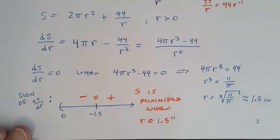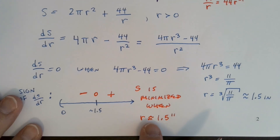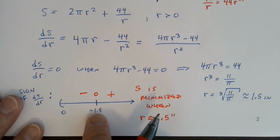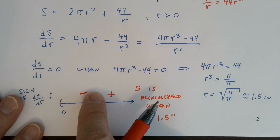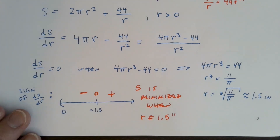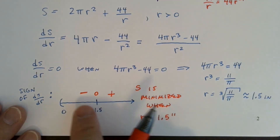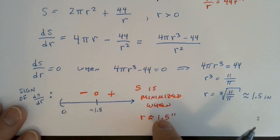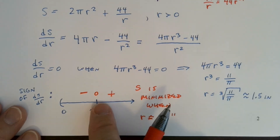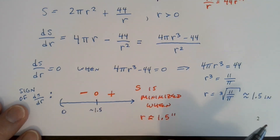Since this is the only extreme value on the domain, the function decreases on (0, 1.5) and increases on (1.5, ∞). So this local minimum is also the absolute minimum on the entire domain. S is minimized when r is approximately 1.5 inches.